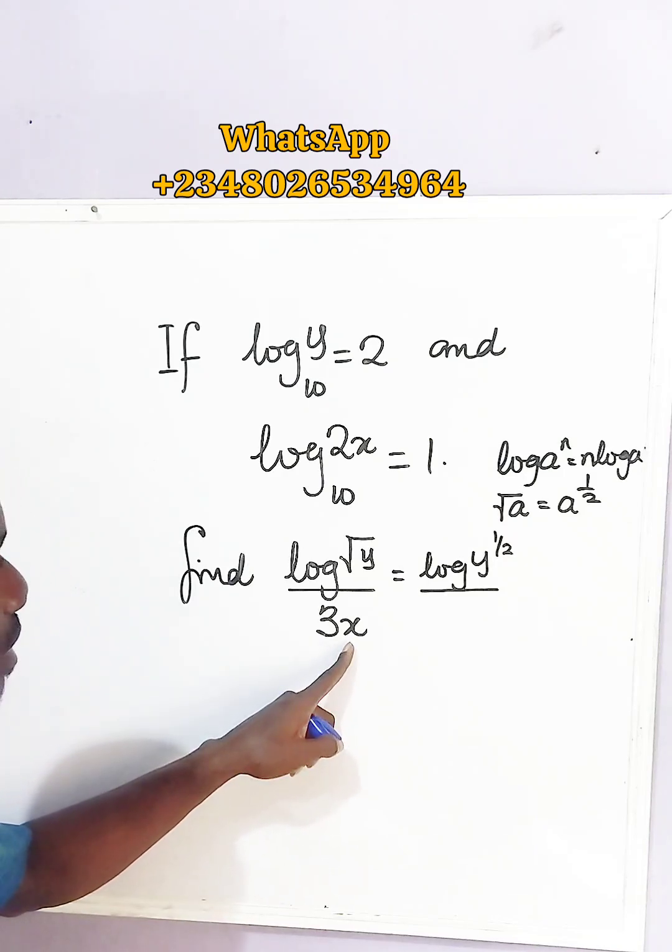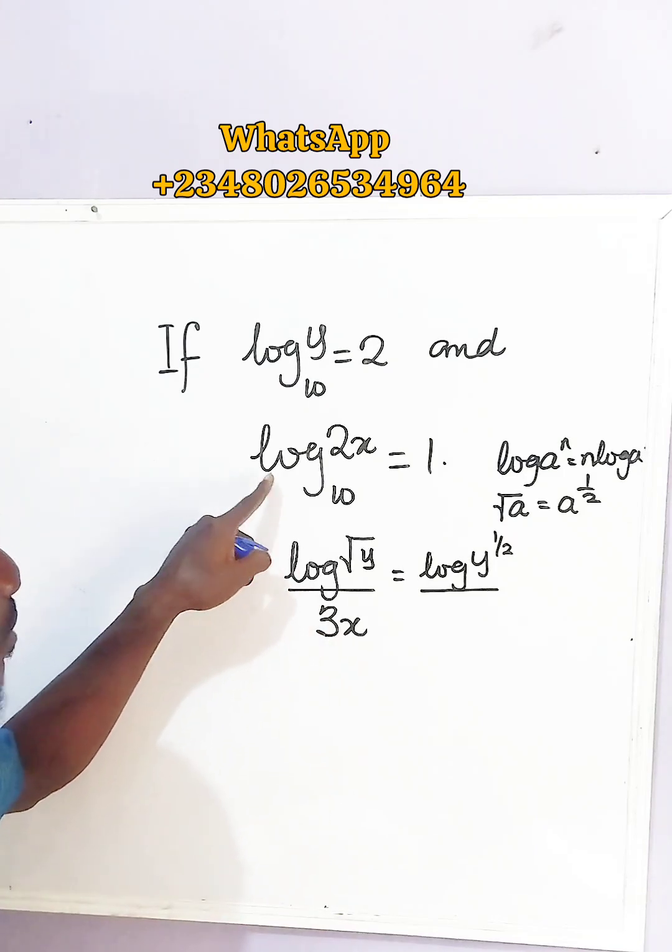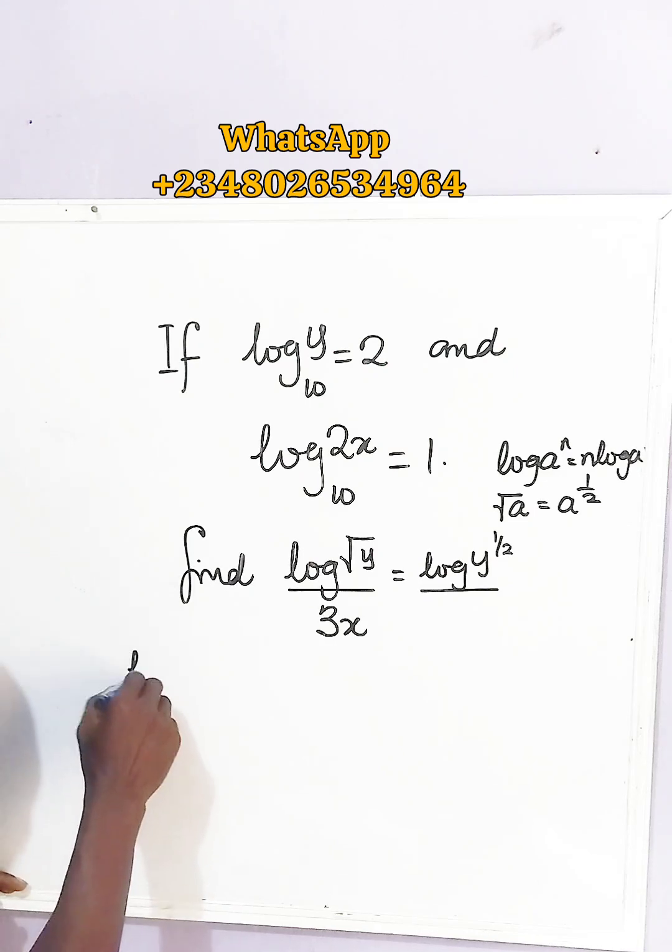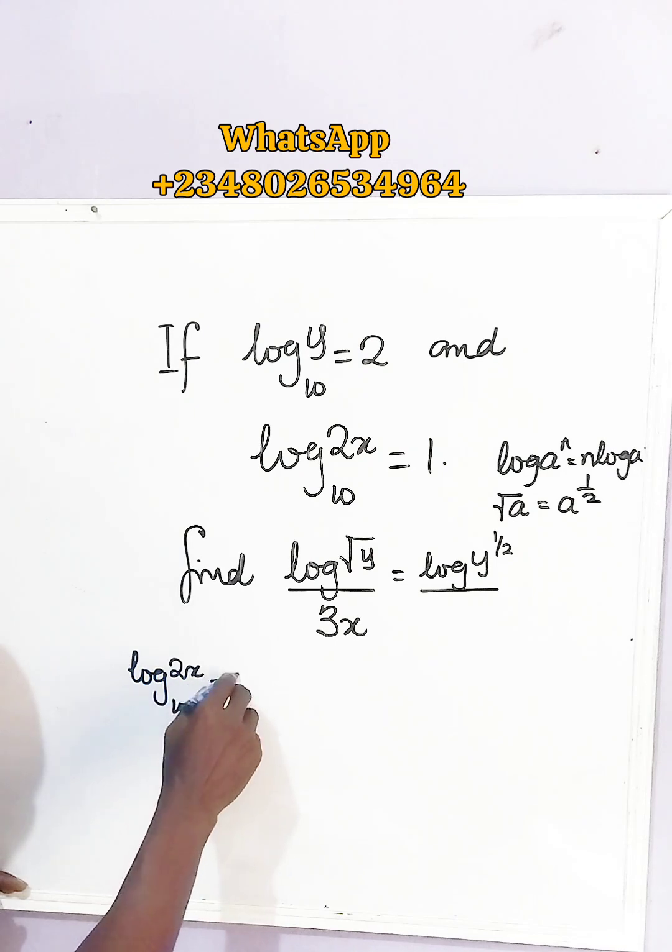let us come over here because this equation contains x. So here we have log 2x base 10 equals 1.